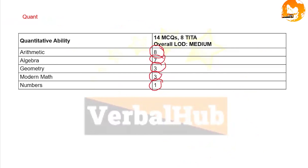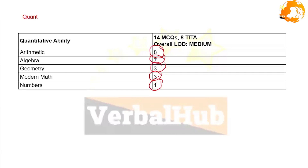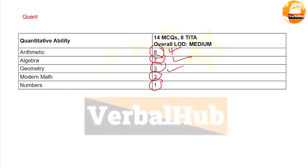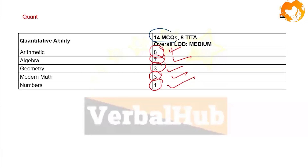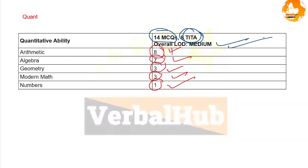There was no question from Trigonometry — none of the students mentioned it during the live analysis. Arithmetic carries the most weightage with eight questions, followed by Algebra. A key trend this year is that the number of TITA (type in the answer / theta) questions has increased rapidly. Out of the quant questions, 15 were MCQ and 8 were TITA. The overall difficulty level was medium.